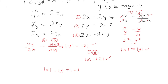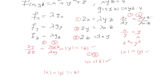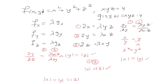Using the constraint xyz = 4, and knowing all values have equal absolute value, if we assume x, y, and z are all positive and equal, then x³ = 4, so x = 4^(1/3). Therefore x = y = z = 4^(1/3), and plugging these into f gives approximately 7.55953.